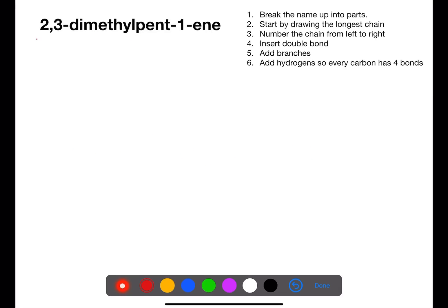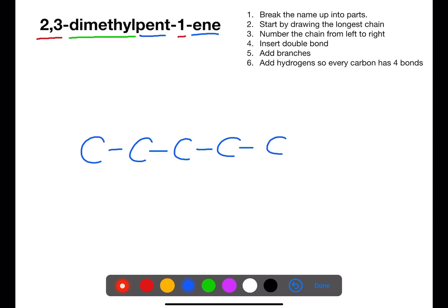Here's another example. We have two branches on carbons two and three, and we have a double bond on one. Our branches are both methyl and they're joined onto a chain of five carbons. Let's draw the five carbons first. We'll number from left to right and between carbon one and two we put in the double bond. On carbon two we have a methyl group and we also have another methyl group on carbon three. We can now move around the structure and add in the bonds for the hydrogens.